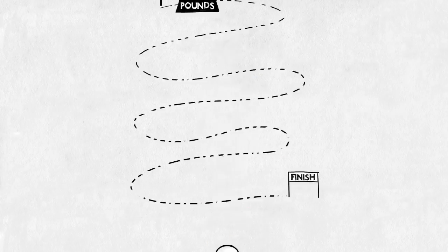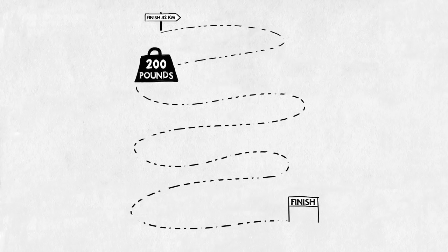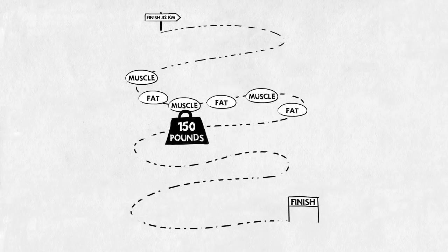The marathoner is a different story. Every pound in his body has to be carried around for a total of 42 kilometers. He gains a lot of benefits by being light. So all excessive muscle mass and fat has to be shed in order to be a top marathoner.